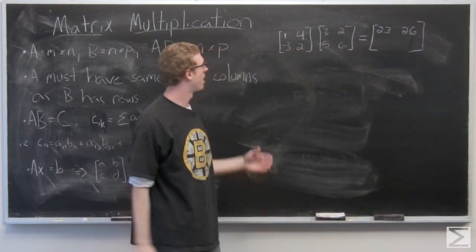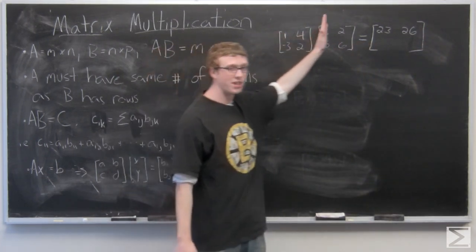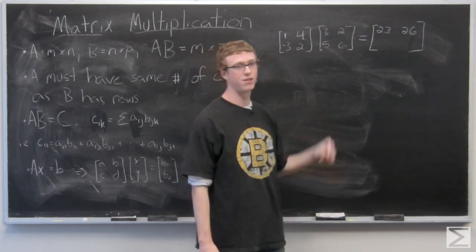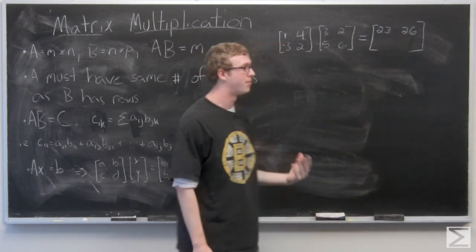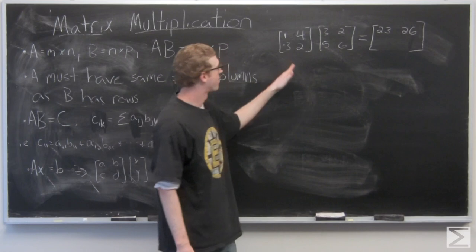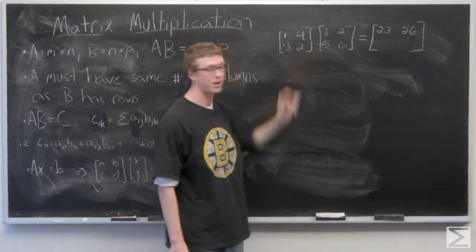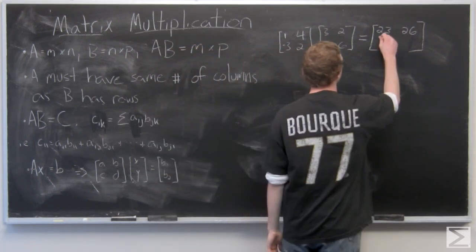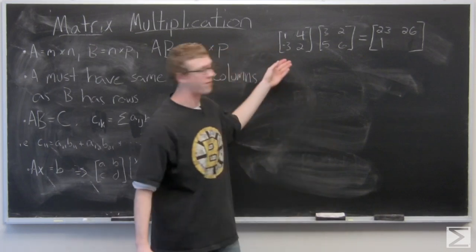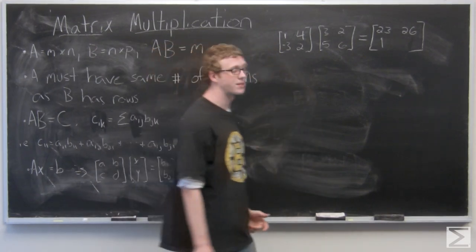And notice we're multiplying the first row by the second column. That's why we get the first row in the second column in matrix C. Now negative 3 times 3 plus 2 times 5. And finally negative 3 times 2 plus 2 times 6.